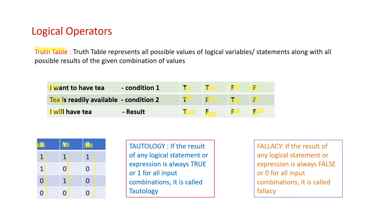A truth table represents all possible values of logical variables or statements along with all possible results of a given combination of values. Tautology: if the result of any logical statement or expression is always true — that is, result equals 1 for all input combinations — it is called tautology. Fallacy: if the result is always false, or 0, for all input combinations, it is called fallacy.